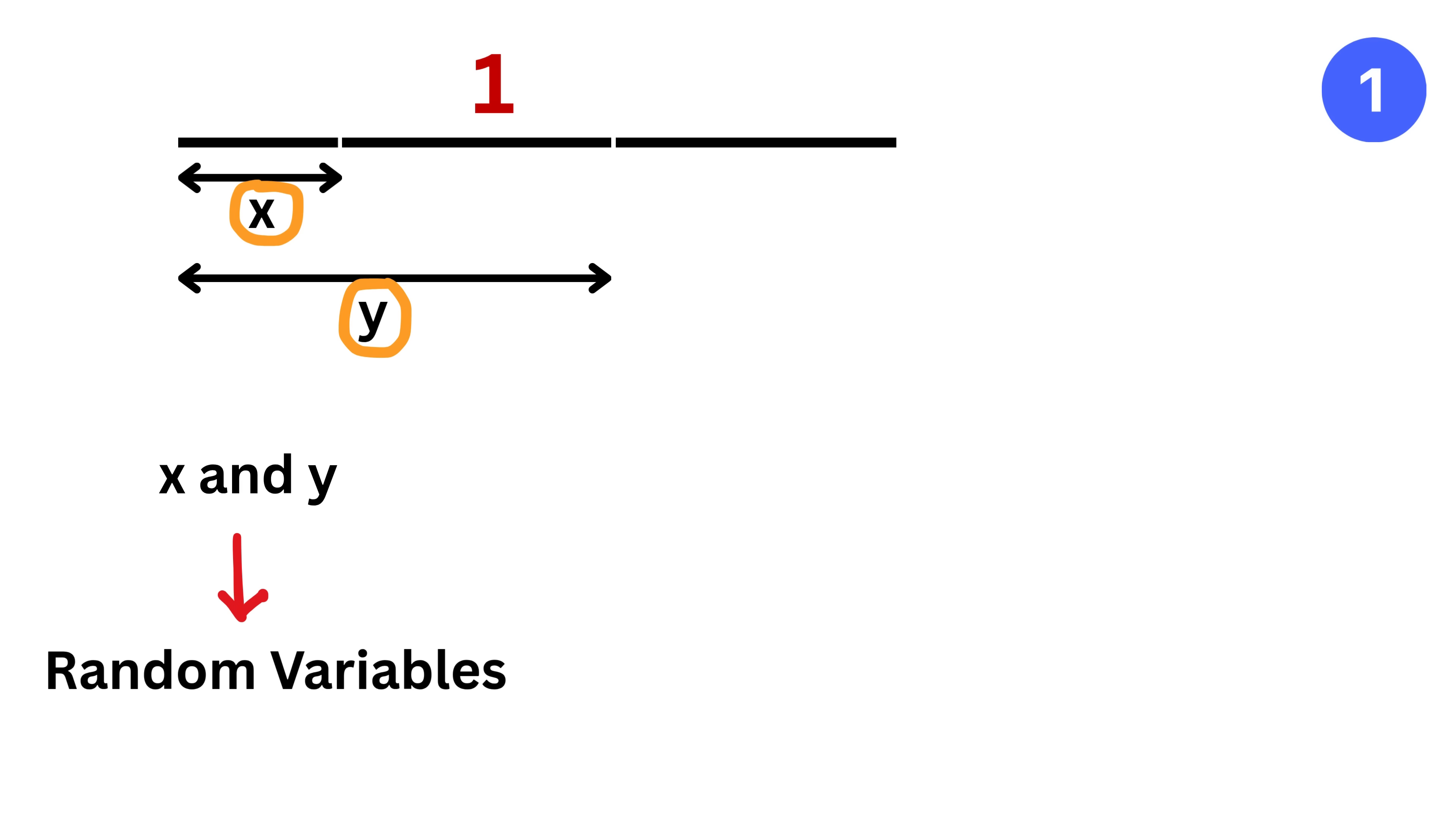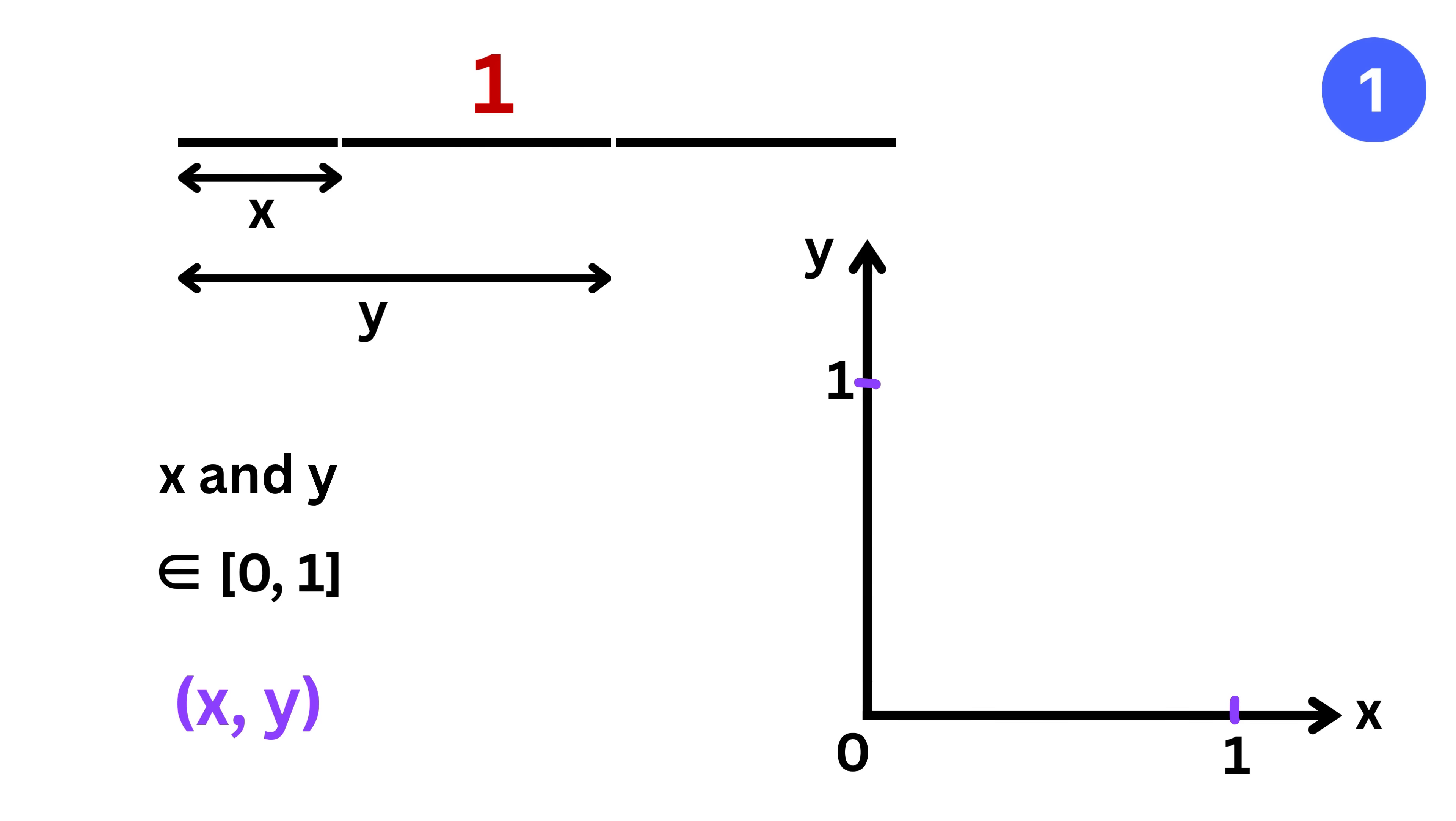Note that x and y are random variables that can take any value between zero and one, since the stick has unit length. Because both points are chosen independently and uniformly, every possible pair of x and y values within this range is equally likely.